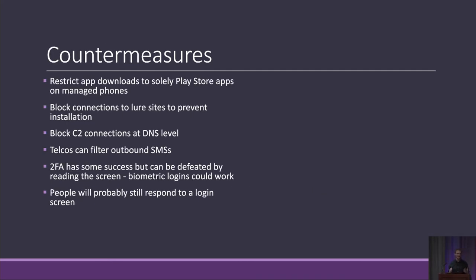So what can we do to defend against that? There's a fairly limited range of defences, and most of them focus on prevention — stopping people getting to the point where they have Flubot installed. If you have a company phone, they may be able to restrict downloads to app store downloads only, because by default Android will let you download apps from unknown locations, as Flubot exploits. However, this only applies to company phones, so it's only a limited form of defence.